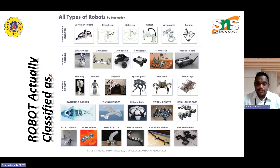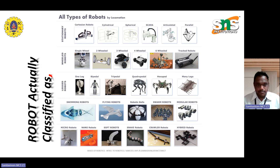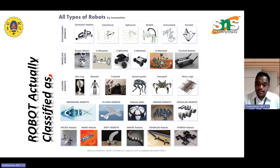Based on wheels, we can classify robots into single wheel, two wheel, three wheel, four wheel, six wheel, and multiple wheel — these can be called wheeled robots. Sometimes we can classify by legs — one leg robot, bipedal robot, tripedal robot, and sometimes in films we see four or five legs used in robots, such as quadrupedal and hexapedal. A large number of legs can be mentioned as many-legged robots.